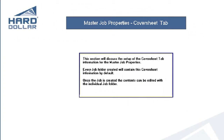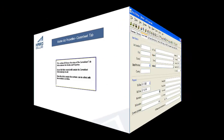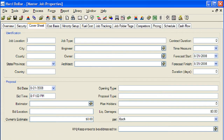This section will discuss the setup of the Cover Sheet Data tab information for the Master Job Properties. Every job folder that is created will contain this cover sheet information by default. Once the job is created, cover sheet information can be modified to reflect the specifics of the new job. The Master Job Properties Cover Sheet is used to describe general terms to the reviewer. This information can be included in the proposal when it is generated from within Hard Dollar. Any information entered into this form will be automatically copied into all new job folders.